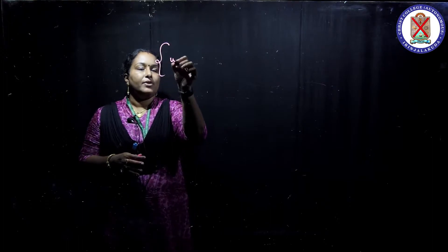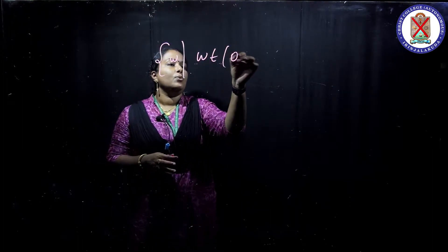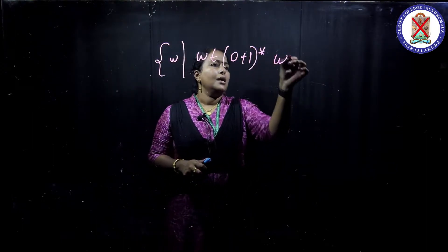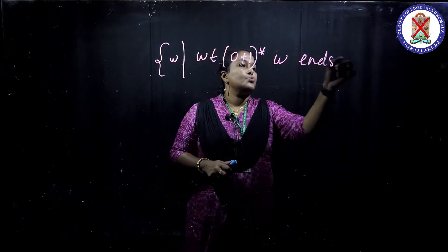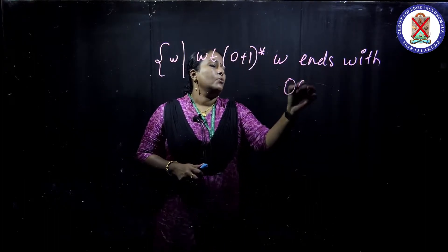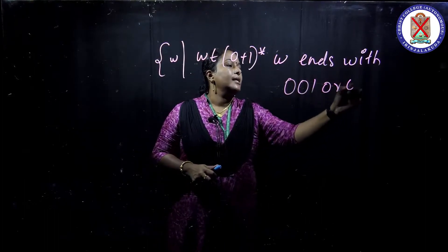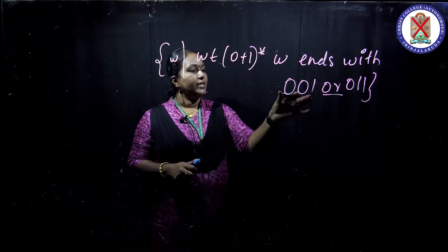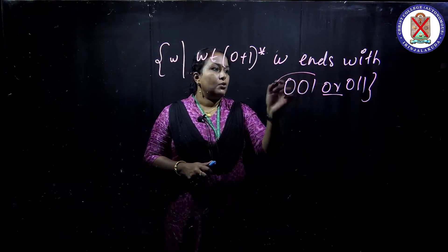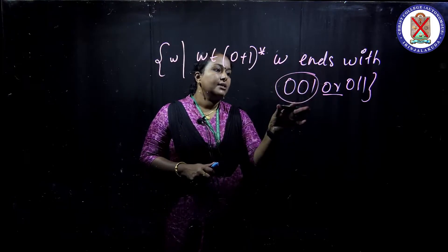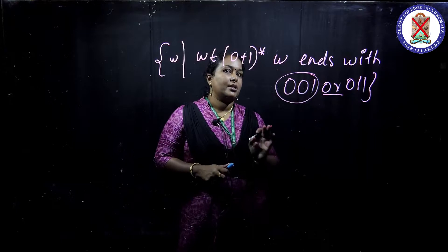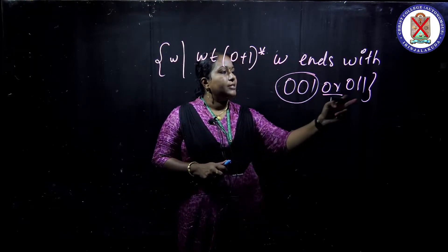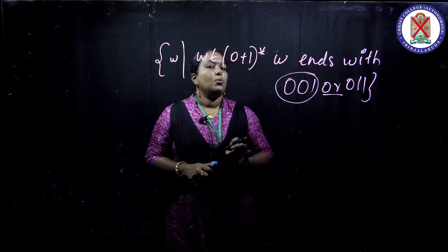So I will write: W such that W is an element of (0+1)* and W ends with 001 or 011. This is the OR condition. In the earlier lecture we have only taken one string at a time, but here we are taking two strings at a time — that is, it can end with 001 or it can end with 011.